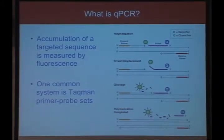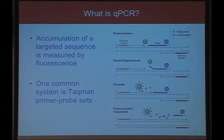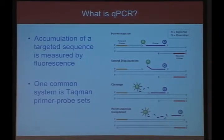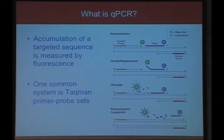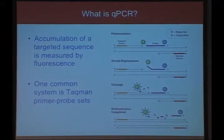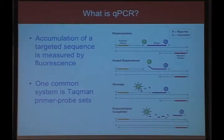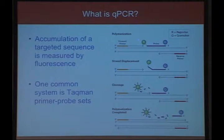Quantitation is done by fluorescence: the more you amplify a target sequence, the more fluorescence is released. The method we use — most compatible with the Fluidigm system and also one of the most common — is called TaqMan. The TaqMan system uses primer-probe sets with a forward primer, a reverse primer, and a probe in the middle of the gene labeled with a reporter and a quencher.